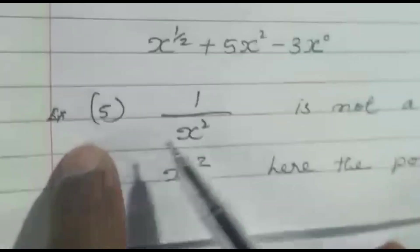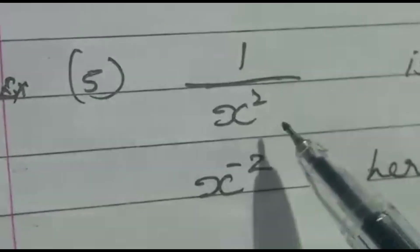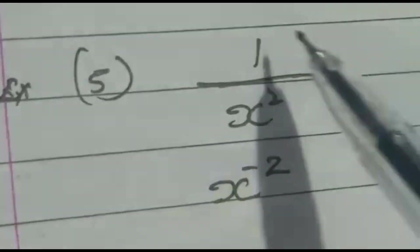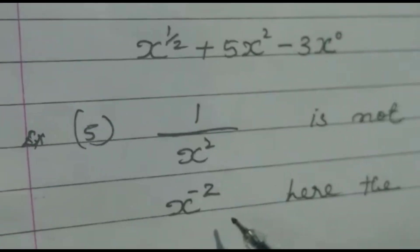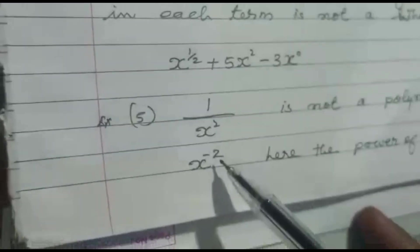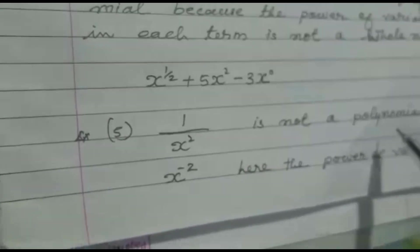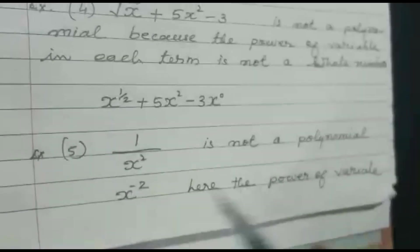Now the fifth example: 1/x². This can be written as x^(-2). The power of the variable is -2, which is not a whole number. Therefore it is also not a polynomial.